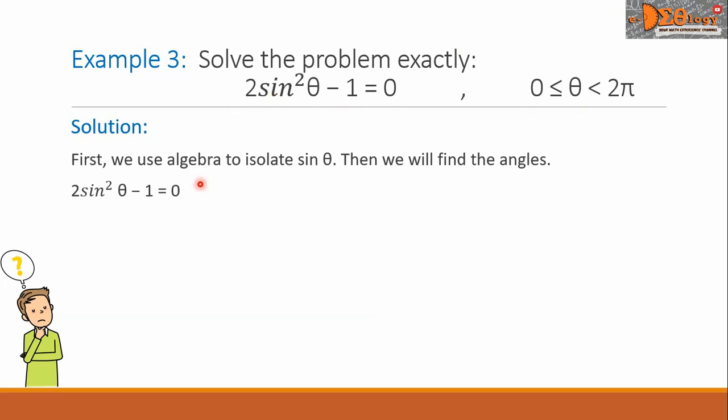We copy this problem down here. Let us transpose this -1 to the right side. So we have now 2sin²θ = 1. Divide this equation by 2. We will get sin²θ = 1/2. Let us square root both sides. So we have here now the square root of sin²θ equals plus or minus the square root of 1/2.